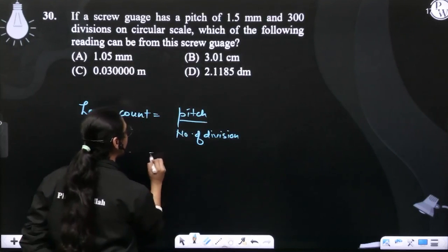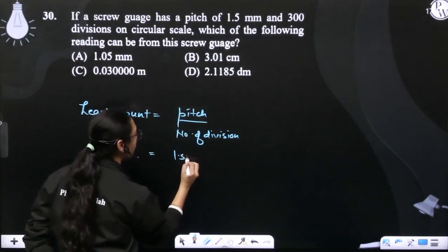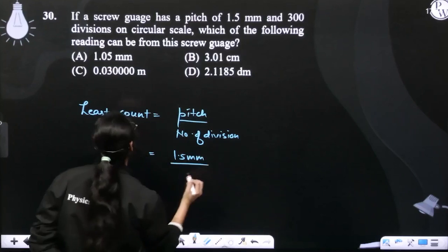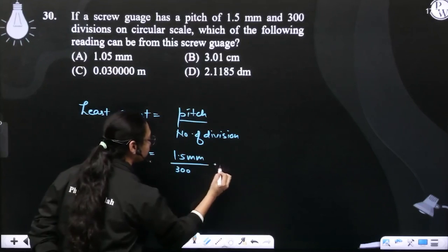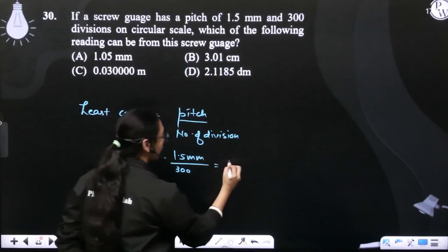Pitch is how much we have given? Pitch is 1.5 mm. Upon number of divisions is how much? 300. Okay, now let's calculate it.